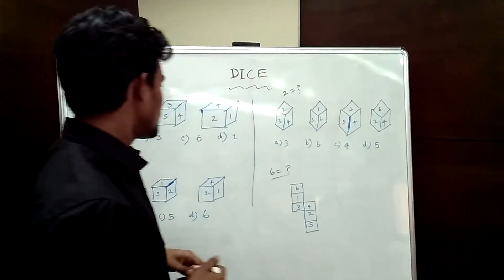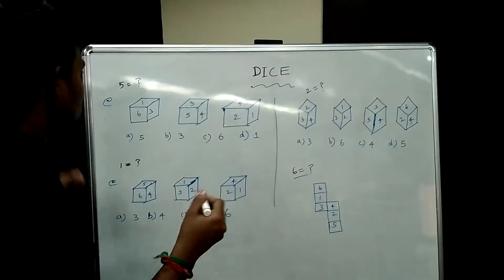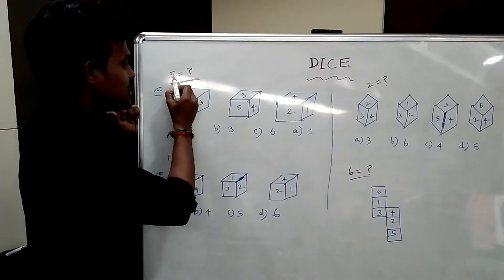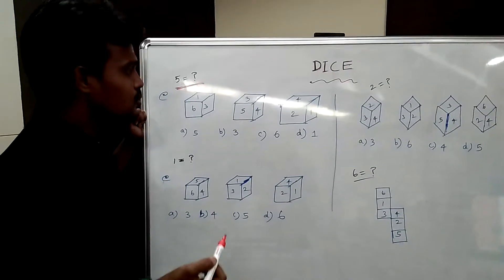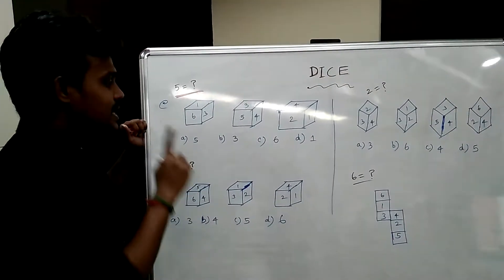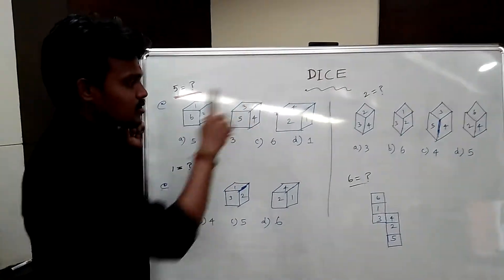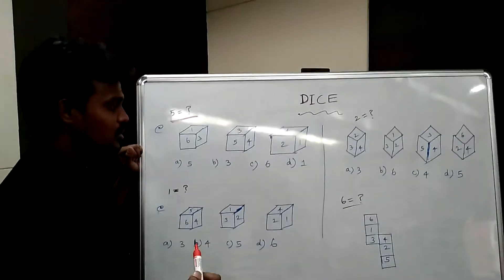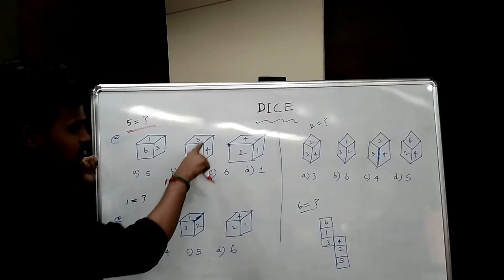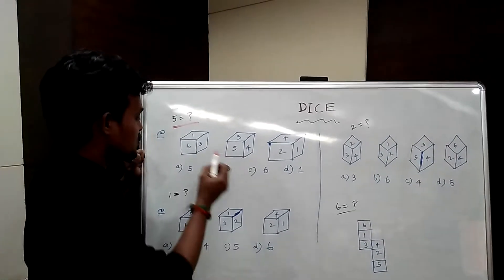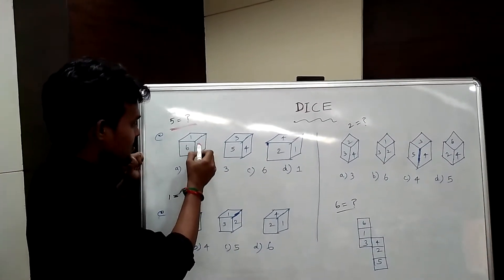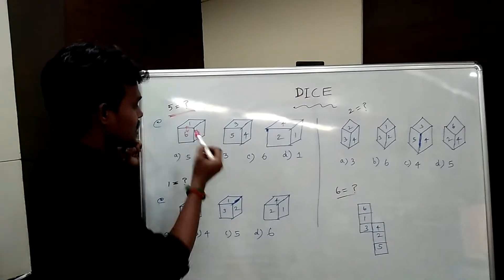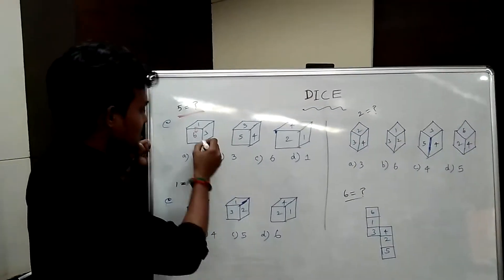It is a standard dice. So if you look at the sum, you will put it in the number. You will find the number 5. So what is the opposite of 5? The addition is 7.